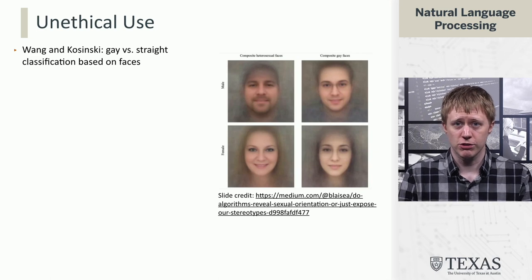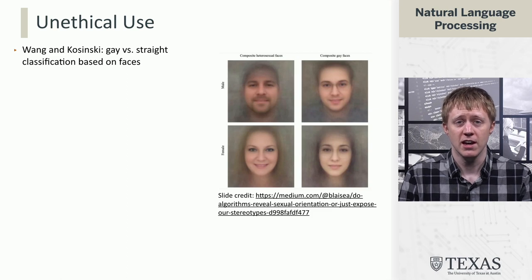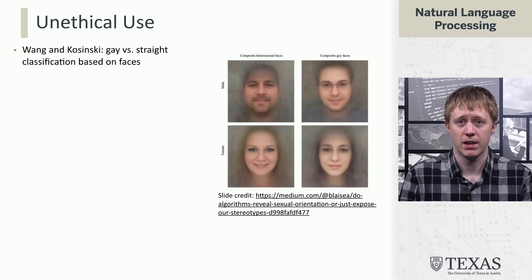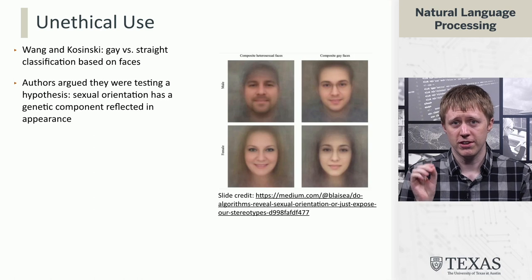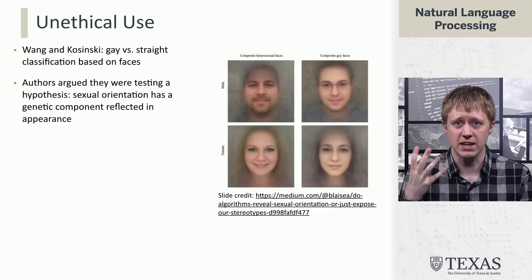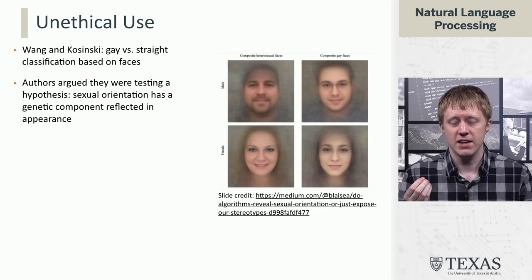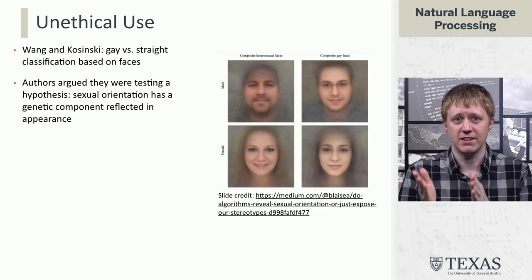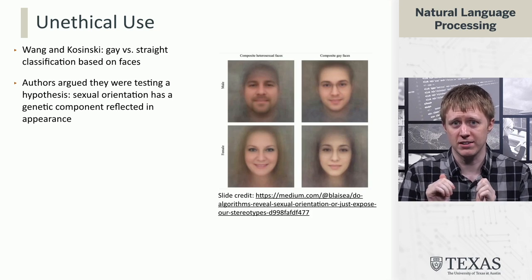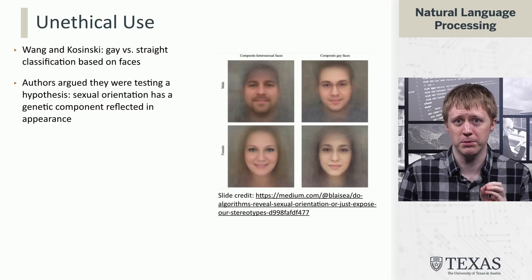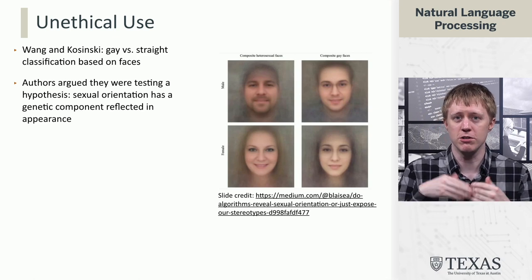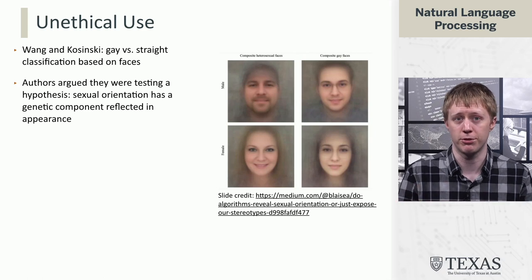Another interesting example from the past few years was work by Wang and Kosinski looking at classifying people as gay versus straight based on photos of their face. The authors argued they were testing a hypothesis that sexual orientation has a genetic component reflected in appearance. However, having a gay versus straight detector is fraught, because there are many places in the world where it's not legal to be gay, and you can imagine such tools being used to arrest people.